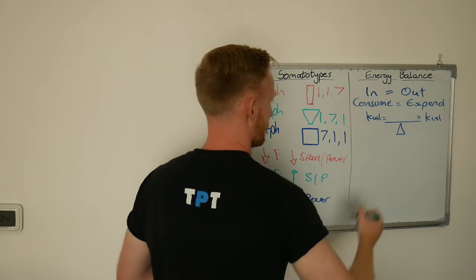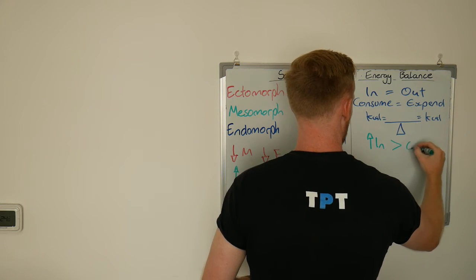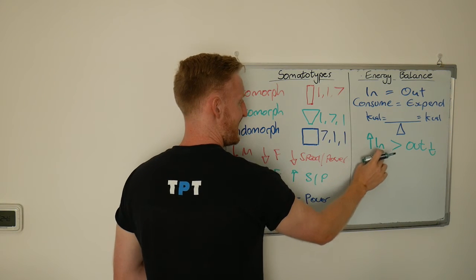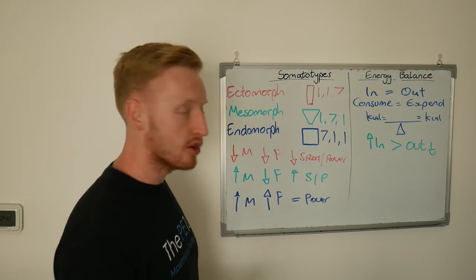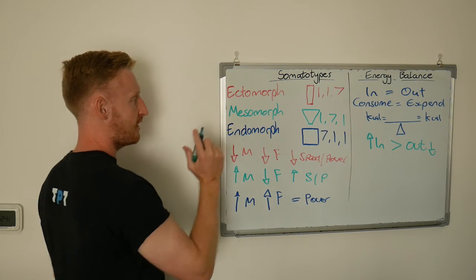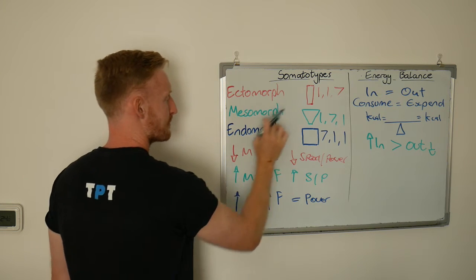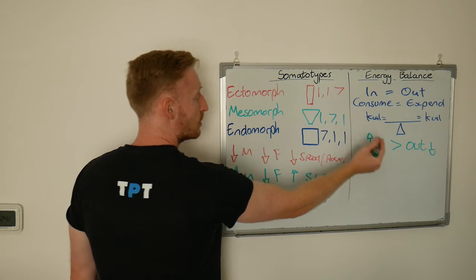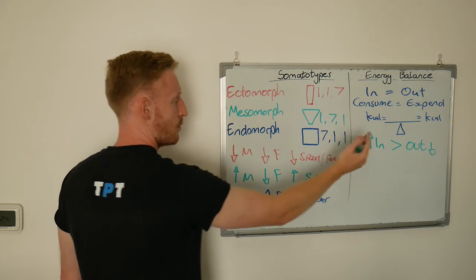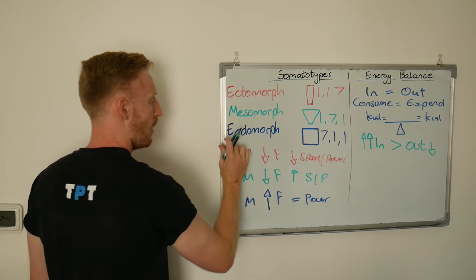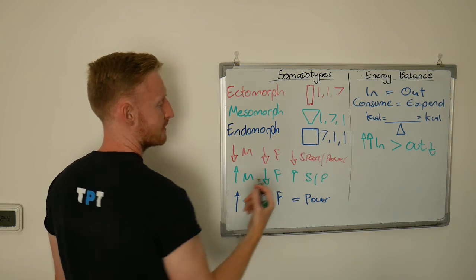But if we start to change it, and we consume more than what we expend, so our consumption in is greater than our expenditure out, then we start to retain energy. How? We store it as fat mass around our body. And suddenly we'll start to see someone, who may have been an ectomorph, start to move towards perhaps mesomorph, because they've got additional energy that can go into muscle production. And then if they continue this positive energy balance, where there's more coming in, they might end up in endomorph territory, because fat mass starts to accumulate potentially around their middle, given the appearance of wider hips.